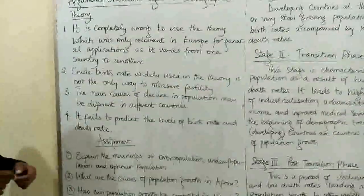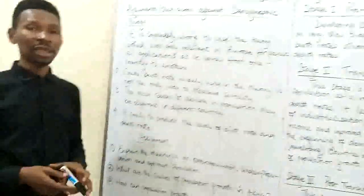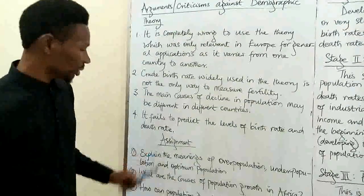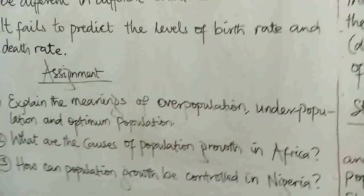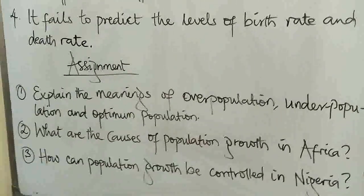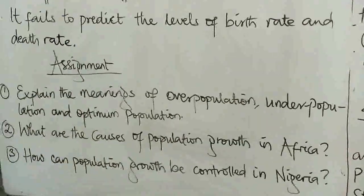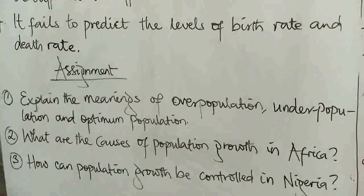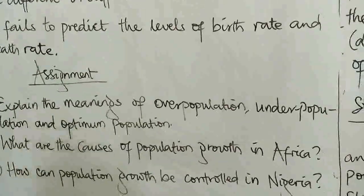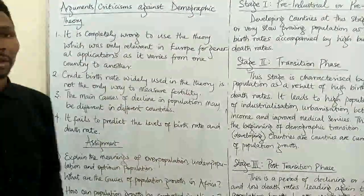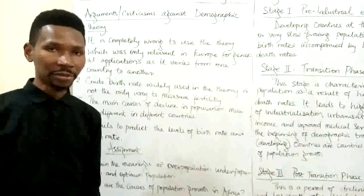This is where we will come to the end of the class for today. Before I go, I would like you to take down the assignment: number one, explain the meanings of overpopulation, underpopulation and optimum population; number two, what are the causes of population growth in Africa, in other words what is the cause of overpopulation in Africa; and number three, how can population growth be controlled in Nigeria? Answer these questions, send them across to me and I will mark them. I think this is the end of the lesson. See you next time. God bless you.